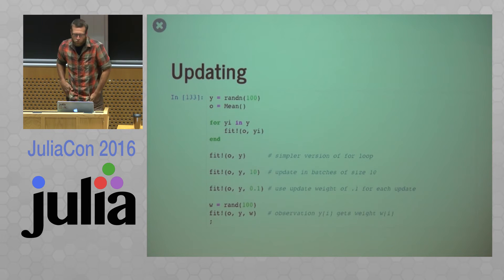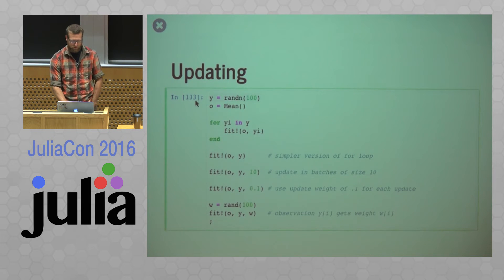Alright. So besides using weights, you have other control over how your objects get updated with new data. So here is just a toy example. I have a vector of 100 random normals and a mean object. So just to show that this is doing it online, I am giving this object a new observation piece by piece of this vector and updating it. So that is one way we can update it is with some singleton observation. We can also give it that entire vector. And this vector is essentially just calling this for loop.